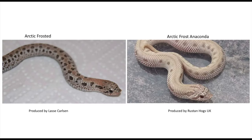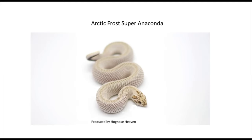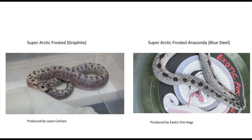Let's take it a step further and add arctic to it. You have the arctic frosted, the arctic frosted anaconda, and the arctic frosted super anaconda. Going further, the super arctic frosted is called the Graphite, and then the super arctic frosted anaconda is called the Blue Steel — a very cool combination and one of my favorite morph combinations involving the super arctic gene.